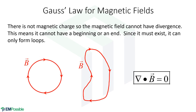Gauss's law for magnetic fields leads to a different conclusion: there is no such thing as magnetic charges or magnetic monopoles. So if we calculate the divergence of the magnetic flux, that has to be zero. Since magnetic fields can't start and can't end, yet they exist, the only way this is possible is if the magnetic fields form loops — they have no beginning and no end. Magnetic fields only ever form loops.